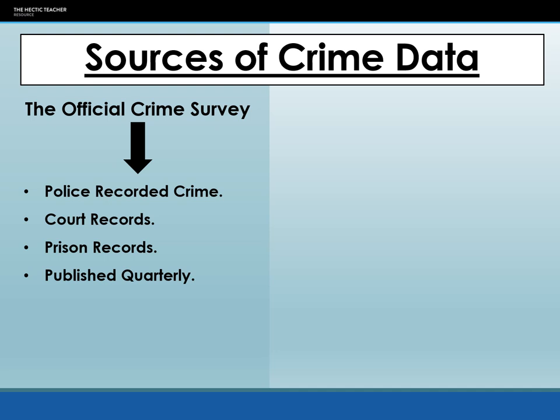Prison records look at the composition of people in prison, again looking at their social makeup — ethnicity, gender, age, class, etc. They also look at the types of crimes that have led to a custodial sentence, the length of that sentence, and the recidivism rate — whether or not these people have re-offended, whether it's their first offence, if they have re-offended whether the crime has become more serious, or whether they're falling down a deviancy amplification spiral.